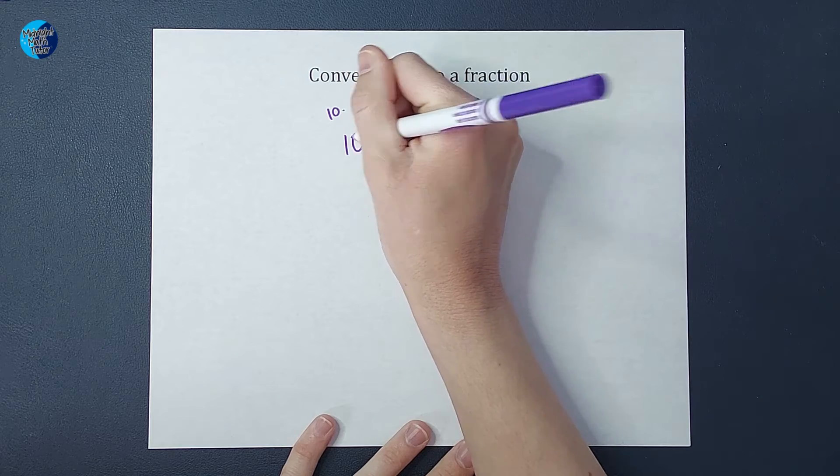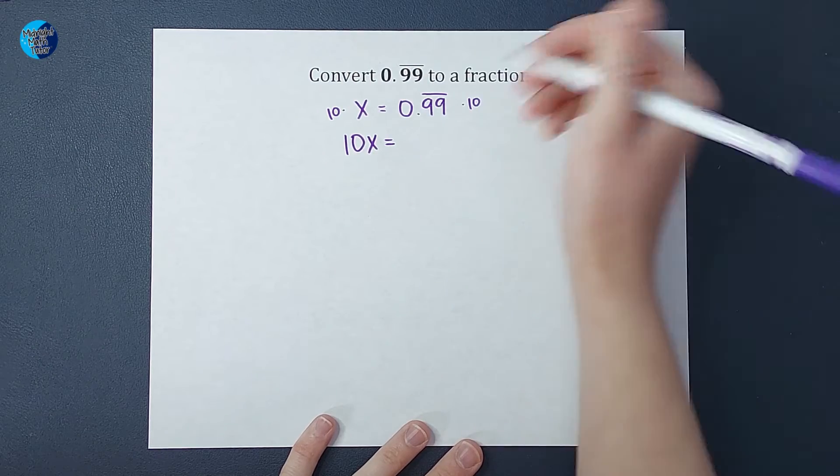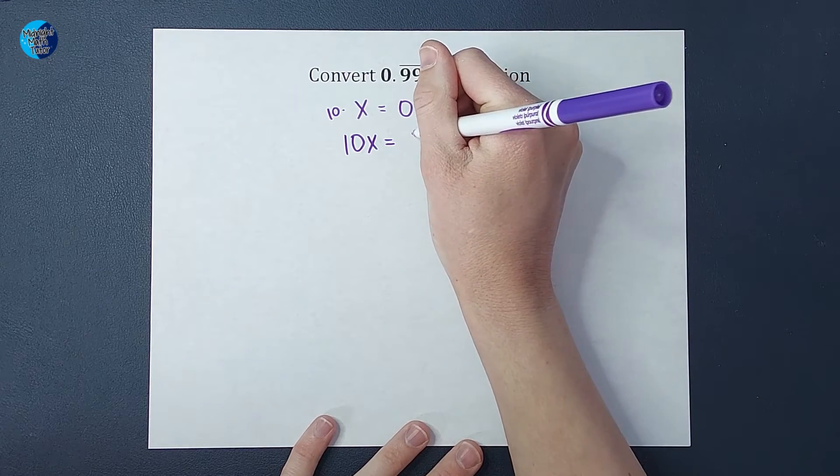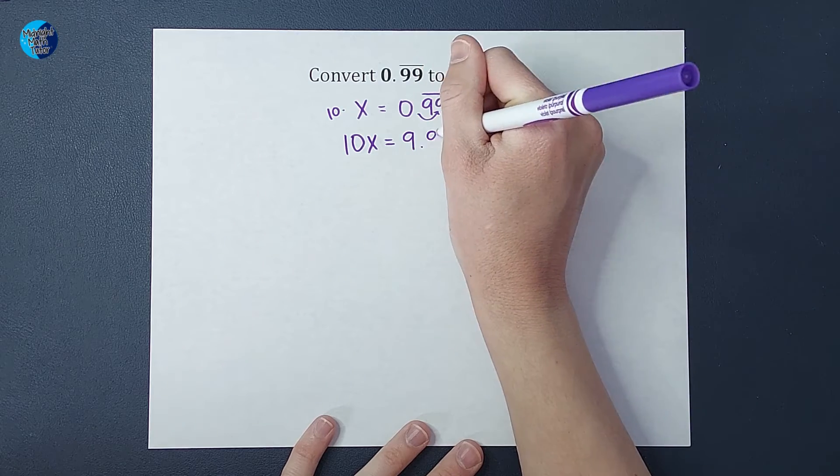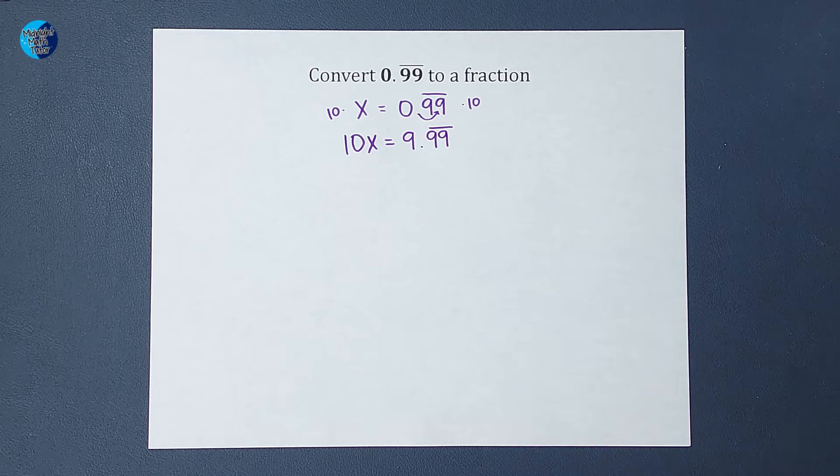When I do that, I end up with 10X equals, when I multiply this side by 10, it moves my decimal place over one spot. So I end up with 9.9 repeating. I can write two if I want. There you go.